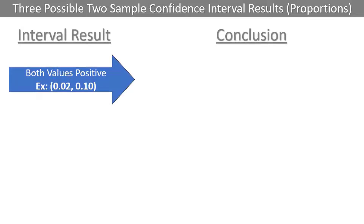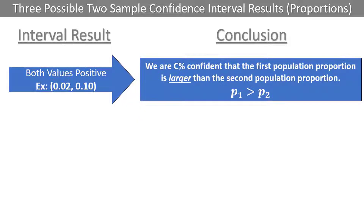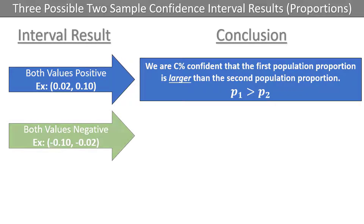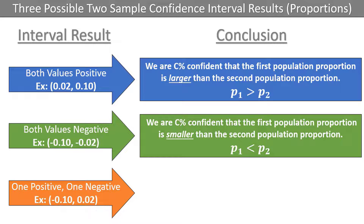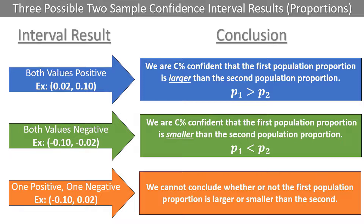For two sample confidence intervals, there are three possible end results. If both values are positive, such as an interval ranging from 0.02 to 0.1, that means we are c% confident that the first population proportion is larger than the second. If both values are negative, such as negative 0.1 to negative 0.02, that means we are c% confident that the first population proportion is smaller than the second. If one value is positive and the other is negative, such as negative 0.1 to 0.02, we cannot conclude whether the first population proportion is larger or smaller than the second.